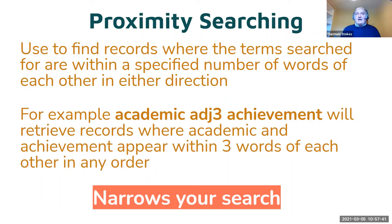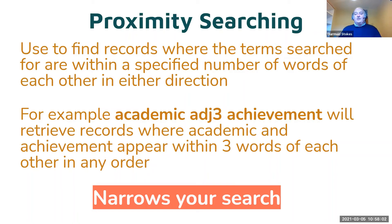Another tool similar to phrase searching is proximity searching, where you are more concerned with how close words are together rather than having them in a particular order. The example is 'academic ADJACENT3 achievement' - that brings back references where academic and achievement occur within three words of each other, but you don't care which comes first. Different databases may use different terms: some say adjacent, some say within or near. You will also have to adjust your search as you go from database to database - you can't just copy your search from one database to another.